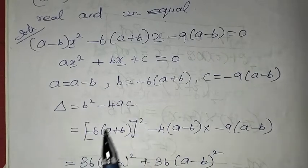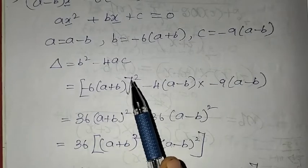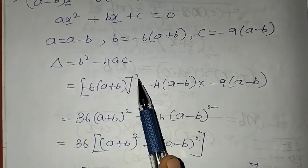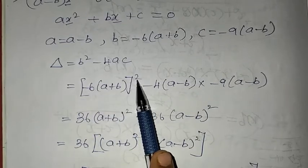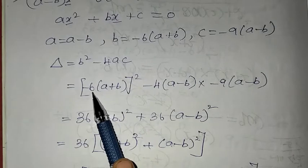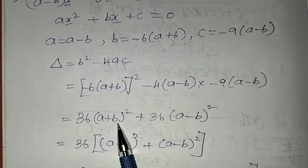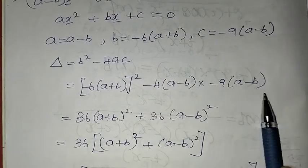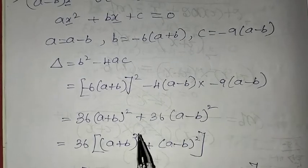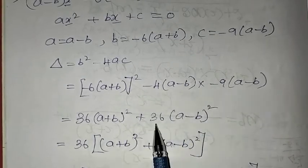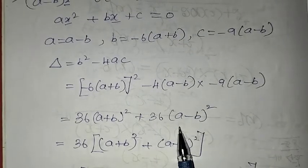These values are the formula. So, minus 6 into (a plus b) the whole square expands. Minus 6 into minus 6 gives 36, so we get 36 into (a plus b) the whole square, and then 36 into (a minus b) the whole square.